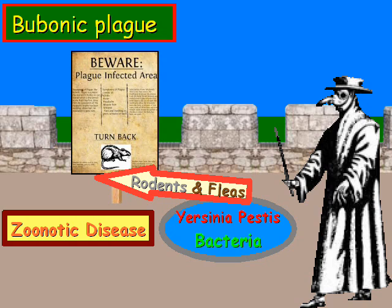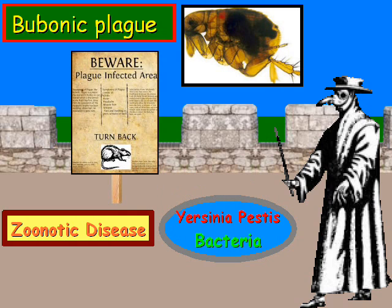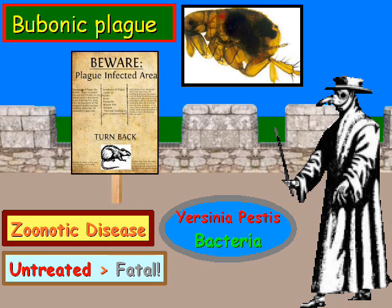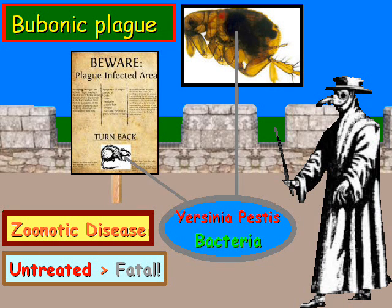So we got a rodent here, and then we have a flea there — it's the black stuff inside of the flea. Now, untreated, it can be fatal. One statistic I've seen was two-thirds of the untreated patients died within four days. So this bacteria is fairly deadly.